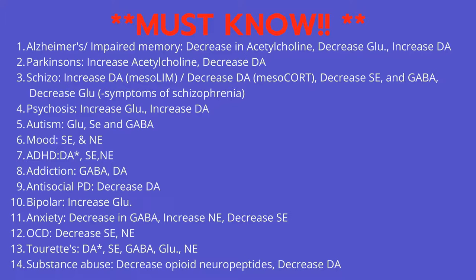Number six: Mood disorders — impairment of serotonin and norepinephrine. Number seven: ADHD — dopamine impairment along with serotonin and norepinephrine impairments. Number eight: Addiction — impairment of GABA and dopamine.